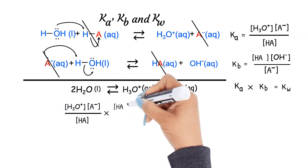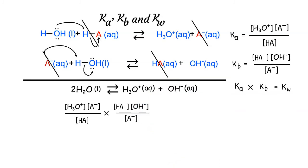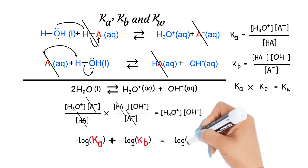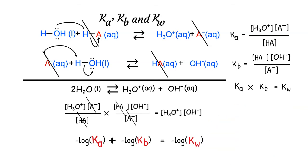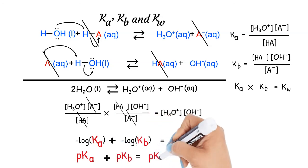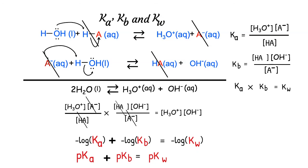We can verify this by multiplying the Ka expression by the Kb expression — HA and A⁻ cancel out and we are left with the hydronium concentration times the hydroxide concentration, which equals Kw. If we take the negative log of both sides, we get the negative log of Ka plus the negative log of Kb equals the negative log of Kw. Since pKa is the negative log of Ka and pKb is the negative log of Kb, we can write pKa plus pKb equals pKw. At 25°C, pKa plus pKb equals 14.